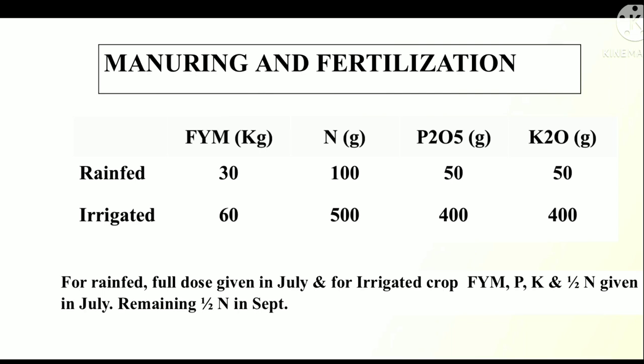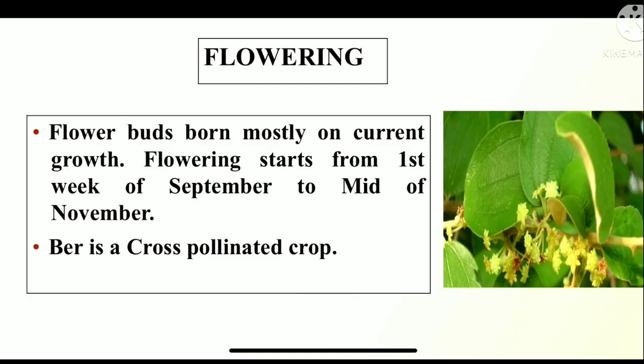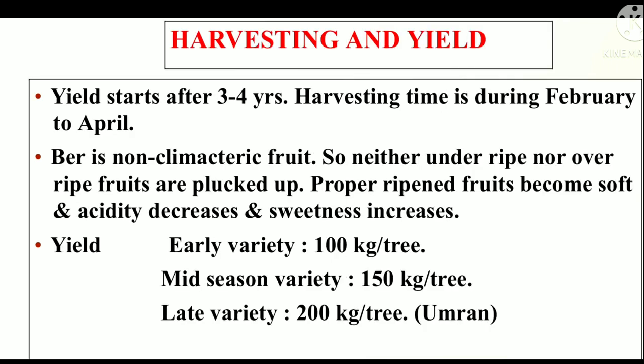Here we can see the manure and fertilizer requirement as given in the table. Flowering: flower buds are borne mostly on current growth. Flowering starts from the first week of September to mid of November. Ber is a cross-pollinated crop. Harvesting and yield: yields start after three to four years. Harvesting time is during February to April. Ber is a non-climacteric fruit, so neither underripe nor overripe fruits are desirable. Properly ripened fruit becomes soft, acidity decreases and sweetness increases.